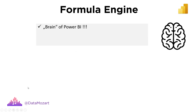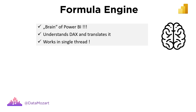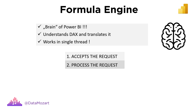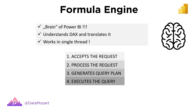Formula Engine represents the brain of Power BI. Formula Engine accepts the query, and since it's able to understand DAX and MDX, it translates DAX into a specific query plan. That query plan consists of physical operations that need to be executed in order to get results back. Those physical operations can be joins between multiple tables, filtering conditions, or aggregations. It's important to keep in mind that Formula Engine works in a single-threaded way, which means that requests to Storage Engine are always being sent sequentially. Formula Engine accepts the request, processes it, generates the plan, and finally executes the generated query.